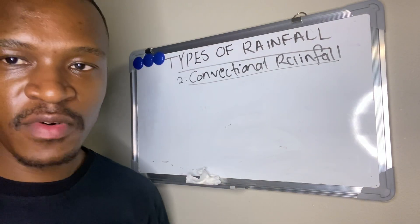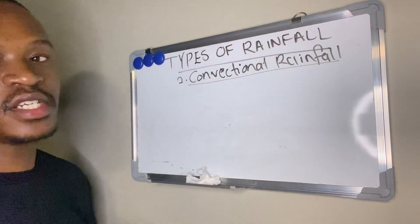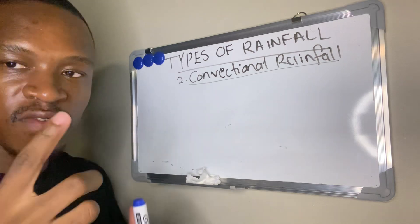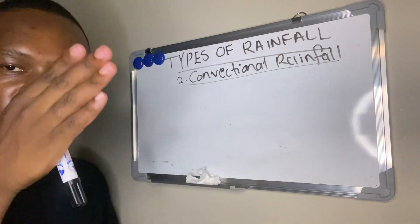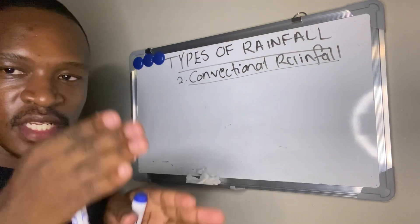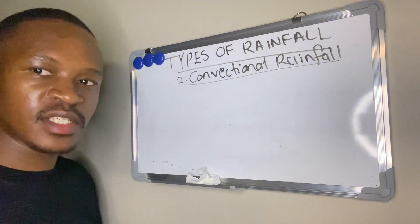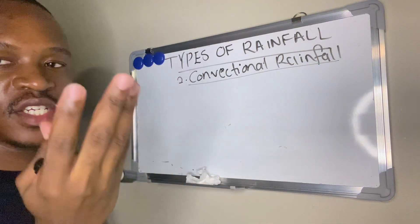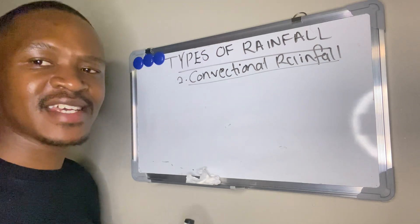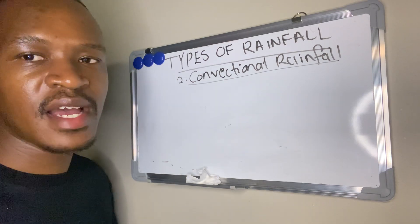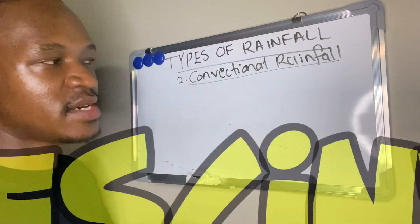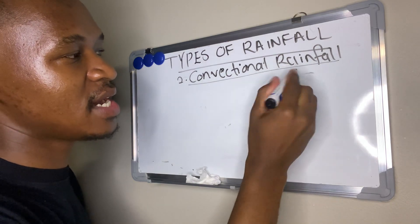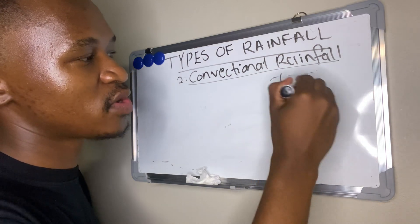The second type of rainfall is convectional rainfall. Convection refers to the vertical movement of heat — when warm air rises, it goes up. This type of rainfall happens when there is high temperature, so it is common in summer. Let me draw the sun to illustrate this.